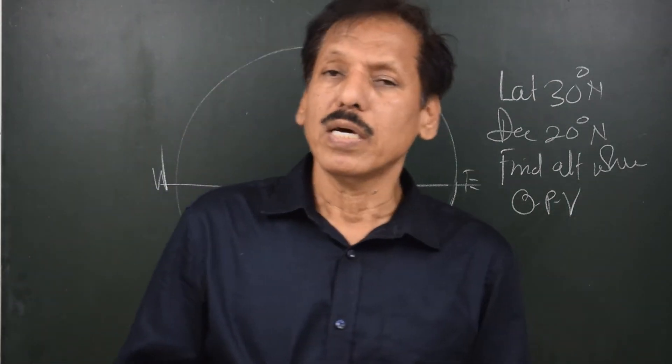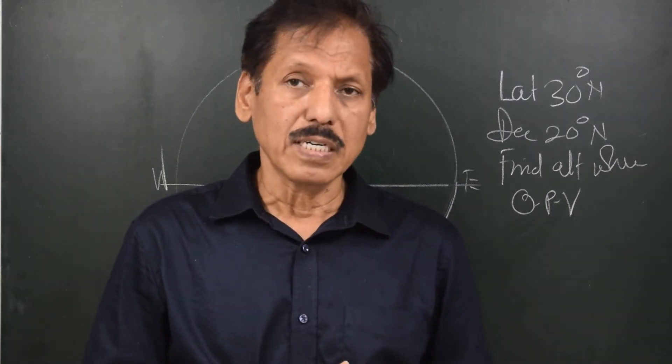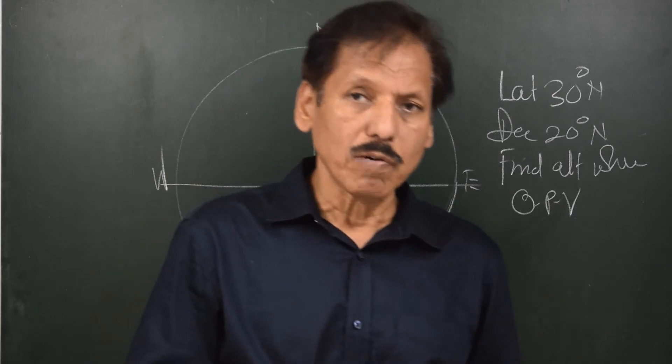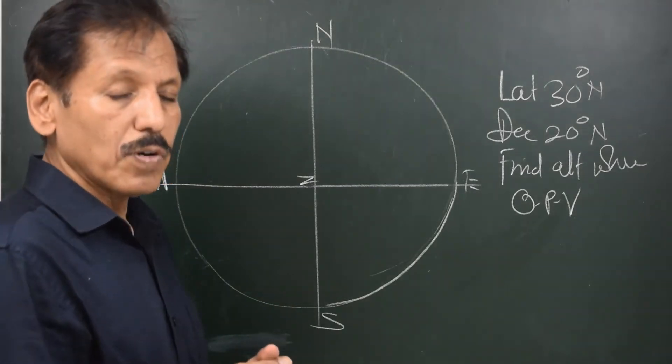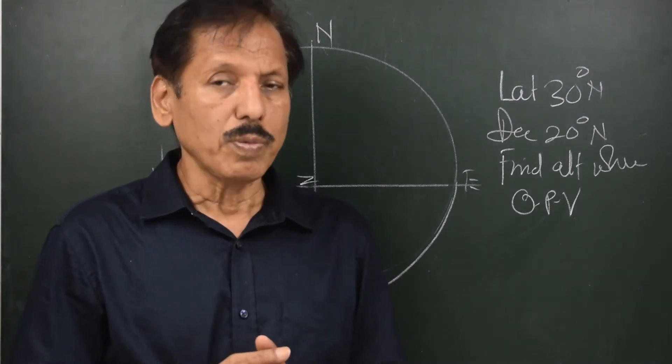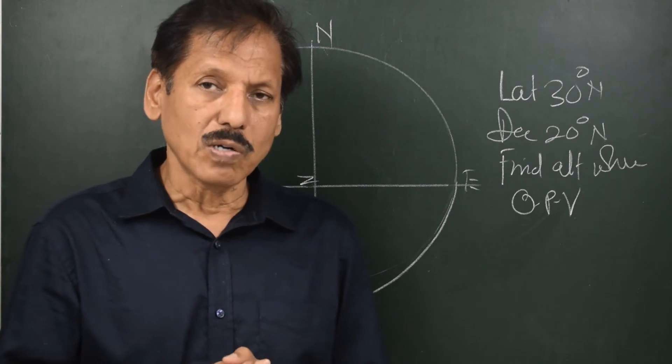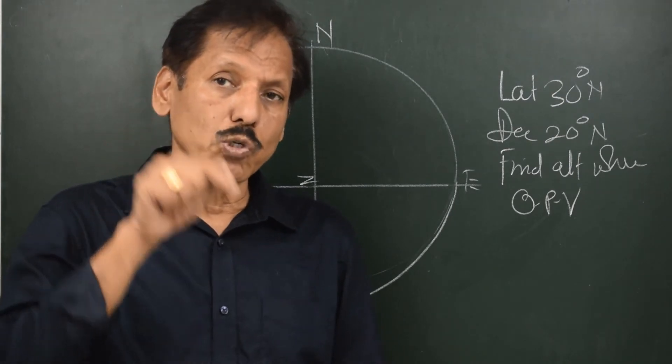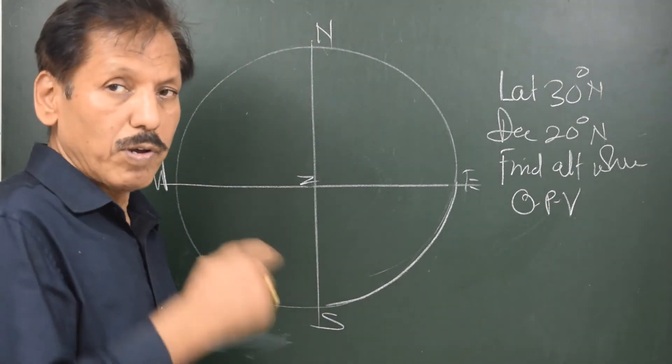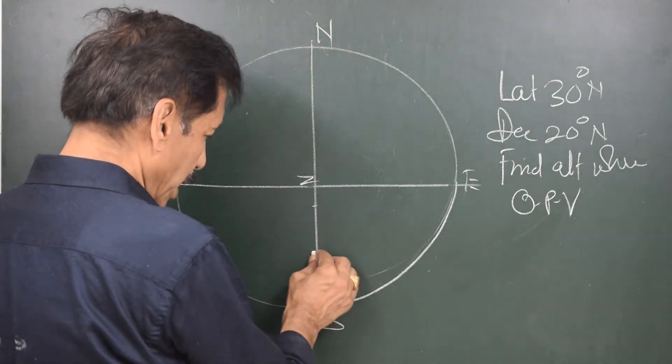let me put the equinoctial 30 degrees to the south of observer's zenith. The rule is when we are drawing the observer's rational horizon for the observer in 30 degrees north, the equinoctial will appear to 30 degrees south. The reason for that is we are trying to look at the observer. An observer should be in the centre of the picture and the observer being in 30 degrees north latitude, if the observer should be in the centre of the picture, the equinoctial should go 30 degrees south.